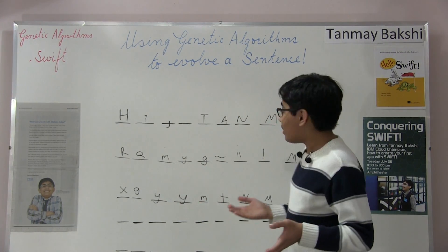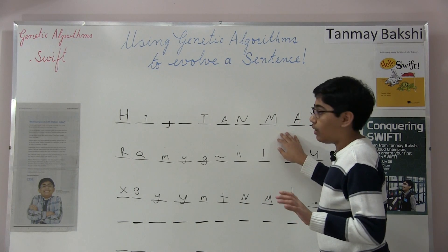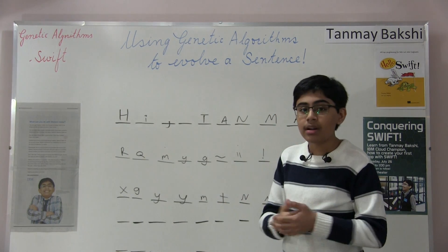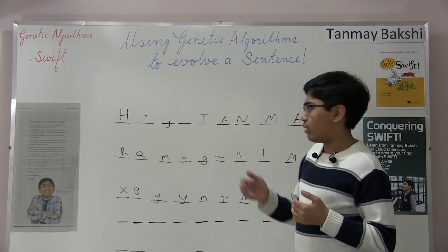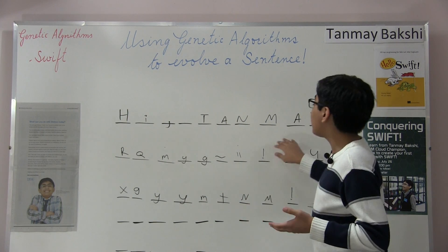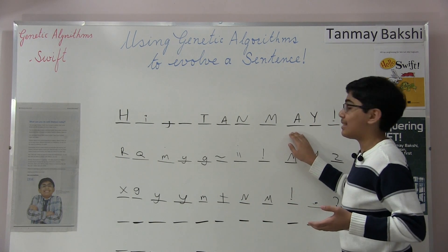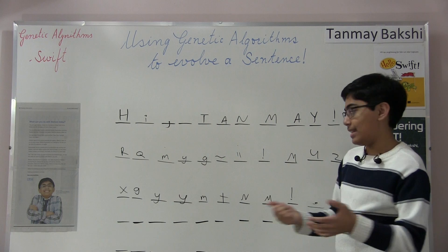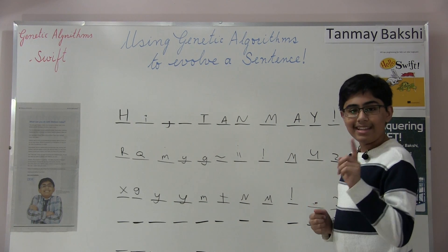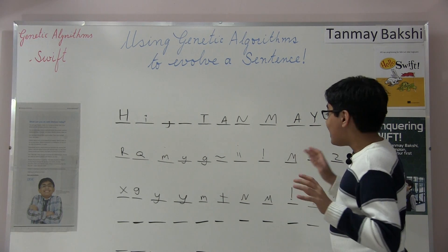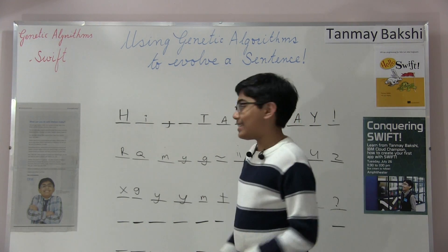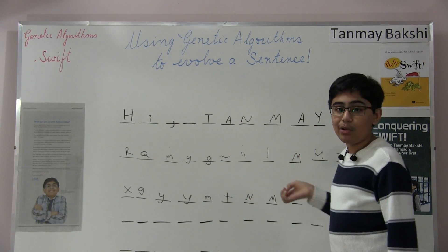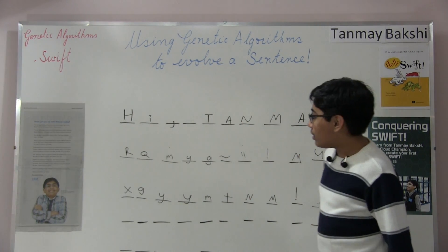I know this technically isn't a sentence by strict definition — you could call it a phrase — but I'm loosely using the term sentence here. Today I'm going to be showing you how you can use evolutionary or genetic algorithms in order to convert a random string into a target string.